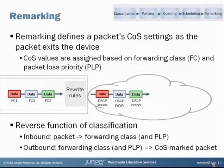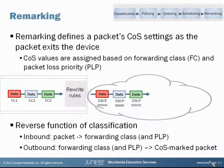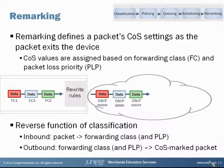We get to the end of our CoS process - our last stage - and we need to step back for a moment. We started with a packet entering our Junos device: we classified the packet into a forwarding class, we may have done some policing, and then we got into queuing and scheduling. Now we're going to send our packet out onto the wire downstream to the next device. However, if we just send the packet out we're really going to lose all that prioritization of one packet over another at the next device. Remarking's function is to solve exactly that.